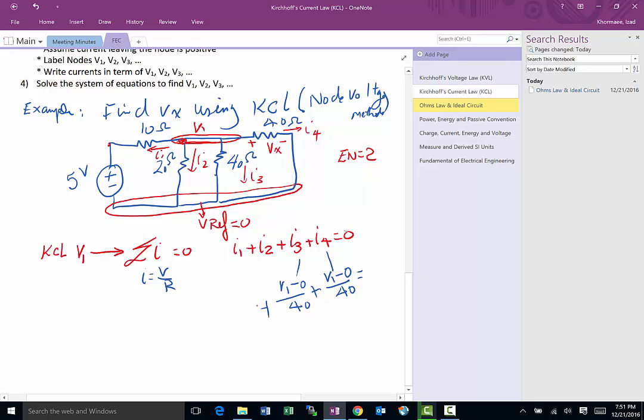So now we got that. Once we got the rhythm, i2 is pretty much the same because if I know the voltage here and I know the voltage here is zero, then it's the voltage difference. We have v1 minus zero divided by 20.